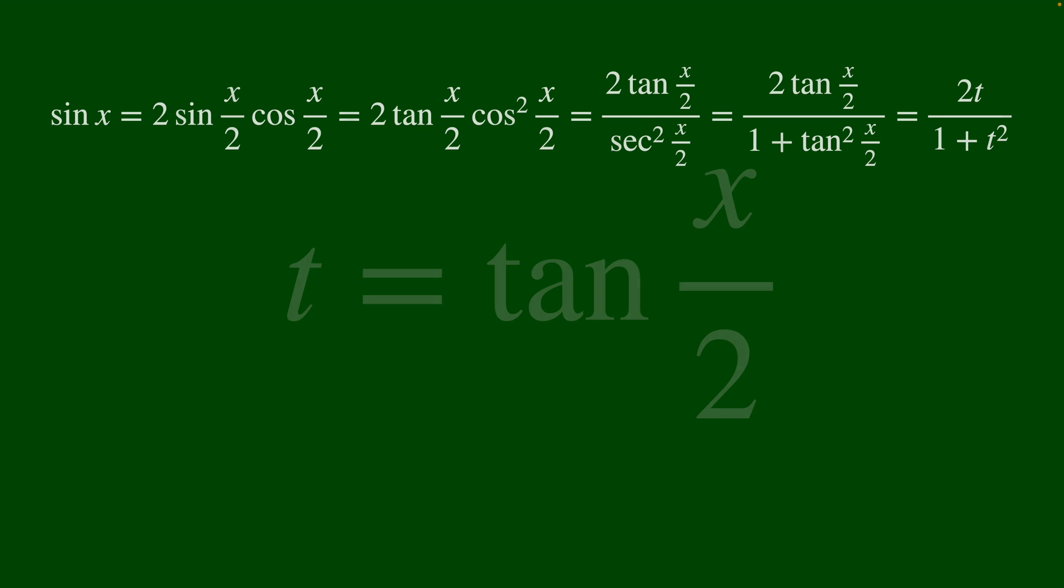This first equality comes from your double angle formula where theta is just x over 2. Then the second equality comes from the fact that we have tan as just sine over cos. So if I do cos squared, I'm fine.